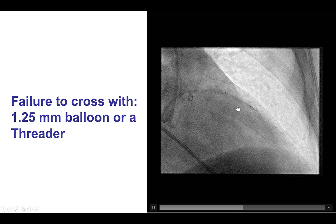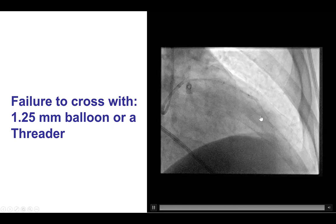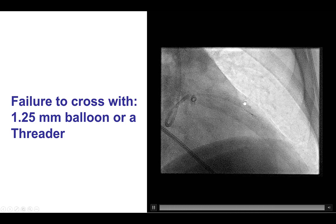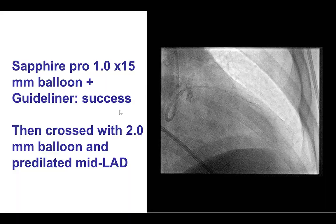The problem, however, is that a 1.5 balloon and a Threader would not cross through the mid-LAD stent, despite using a GuideLiner. So this is a balloon uncrossable lesion. The suggested algorithm starts with a small balloon first, followed by more support, typically with a guide extension, then microcatheters, laser atherectomy, and subintimal techniques. In this particular case, the reason for the failure to cross is likely the wire going under the stent struts, which creates resistance to equipment advancement.